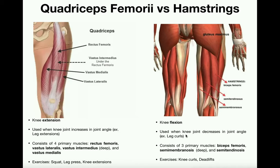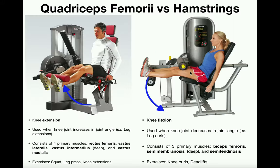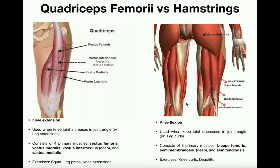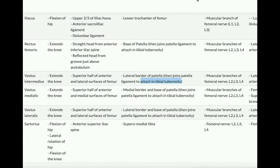Knee flexion is any time the knee joint decreases in its joint angle. A good example is the knee curl machine — if this woman begins her motion and then forcibly moves her lower legs down, the knee joint angle decreases. That action is facilitated by the hamstring muscles.